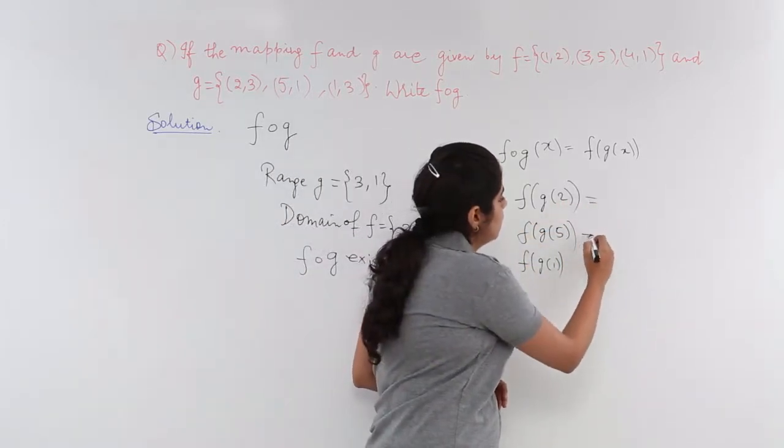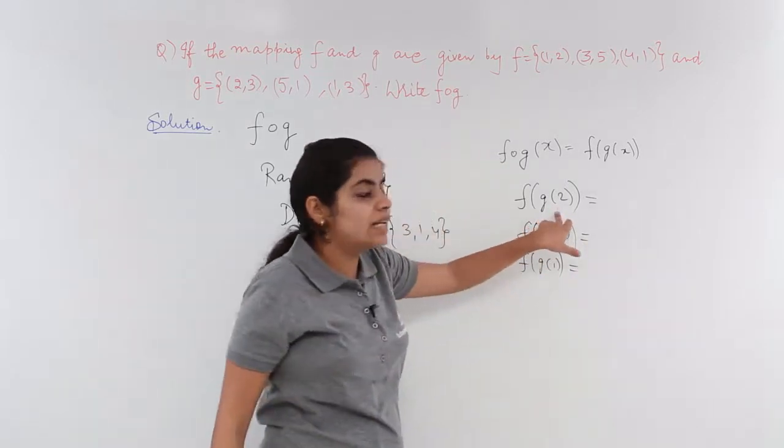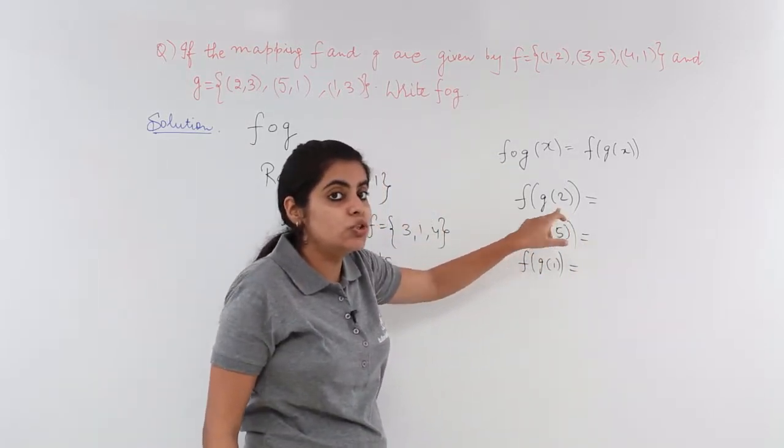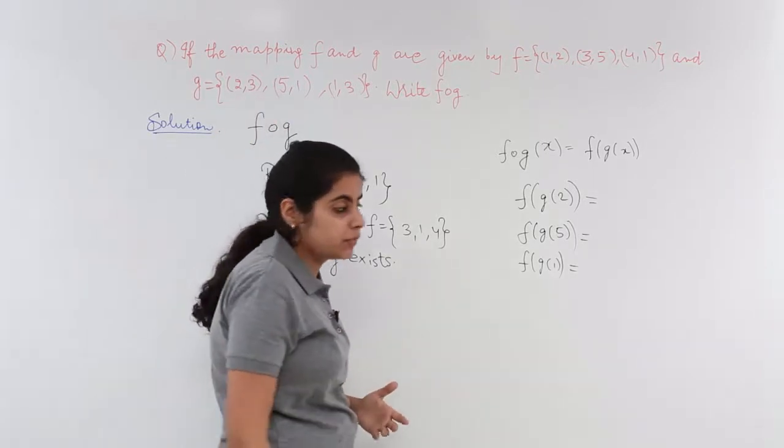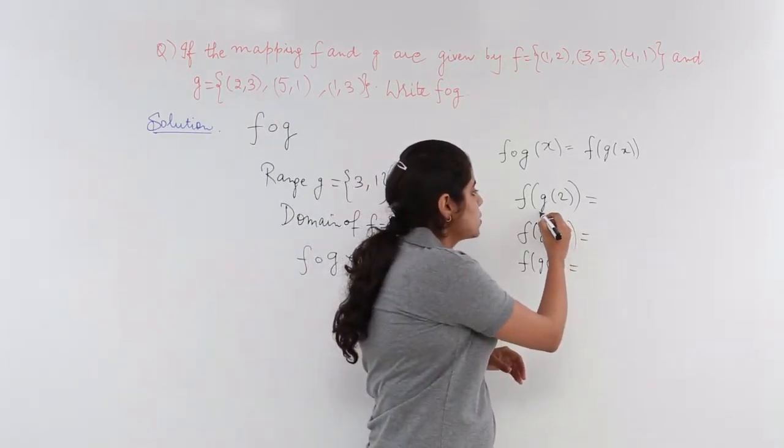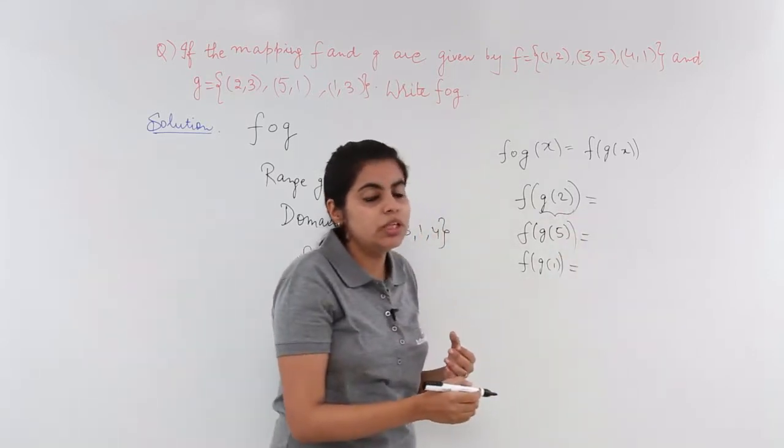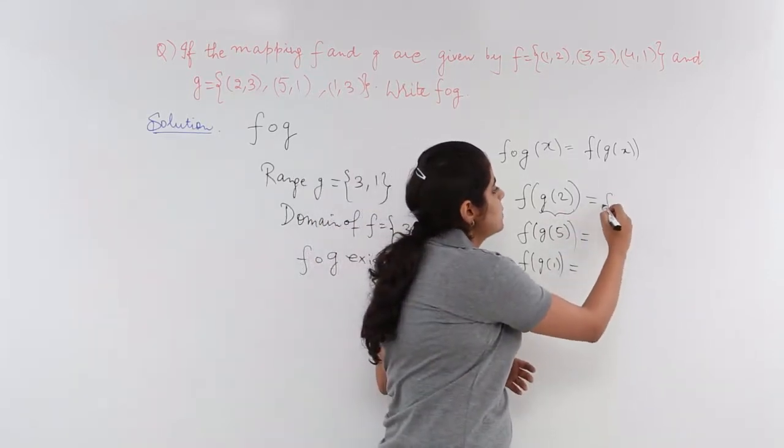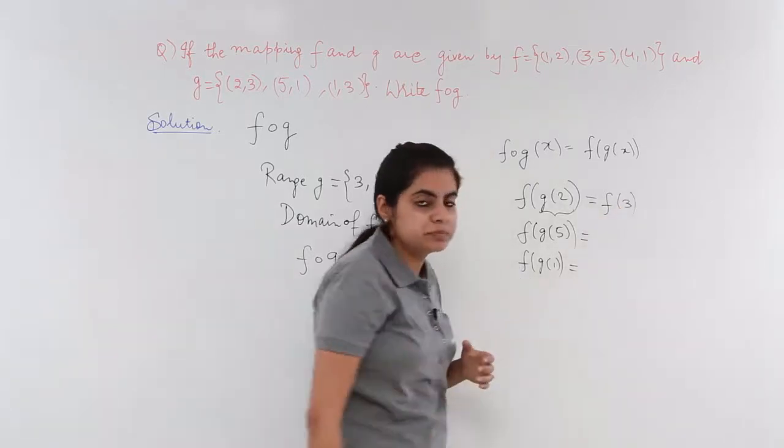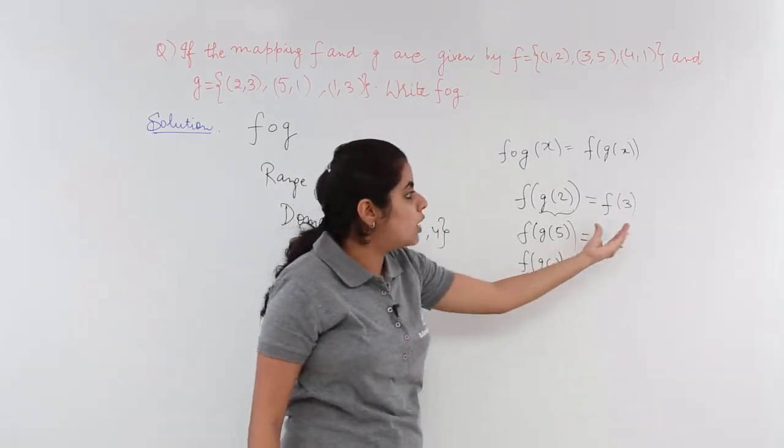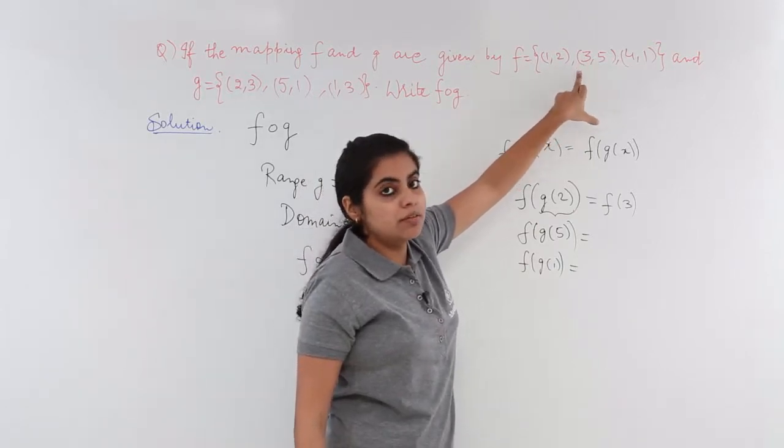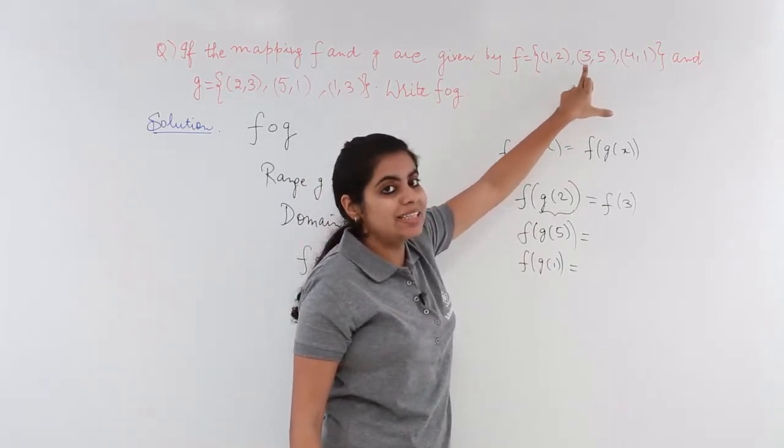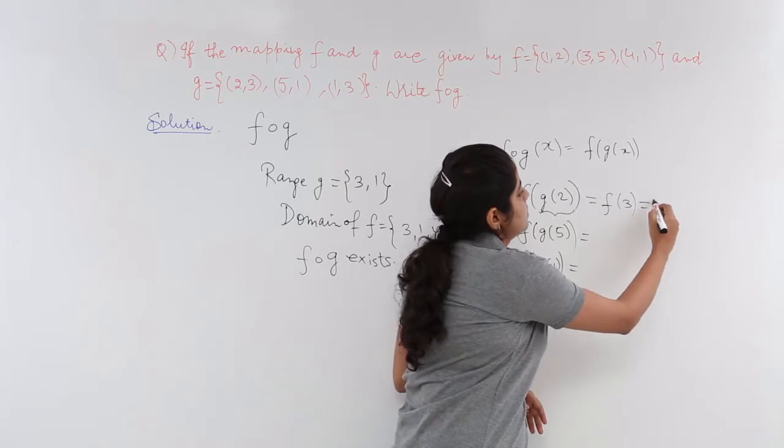Now further computing the values, what is G of 2? G of 2 is 3. So in place of this G of 2 we need to write down the value which is 3. So it becomes F of 3. Now what is F of 3? F of 3 is 5. The value of function F at 3 is 5. So this becomes my 5.